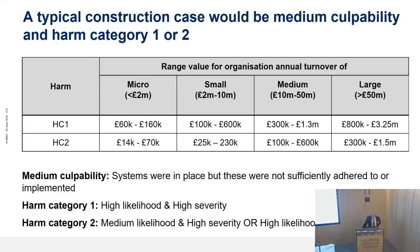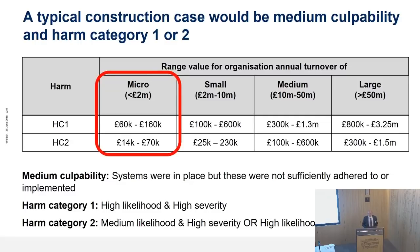Just to give you an indication of the sorts of fines you could expect: in a typical construction case it would be medium culpability and harm category one or two. Medium culpability means systems were in place but either weren't used or weren't used properly. Harm categories one or two mean there was high severity and/or high likelihood of it happening. For organisations likely in the room today — in the micro category, less than £2 million turnover — for a harm category one, you're looking at fines of £60,000 to £160,000, which would make a fair impact on any business.